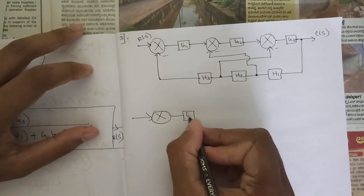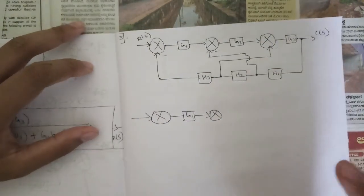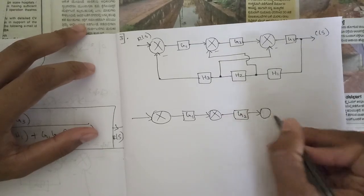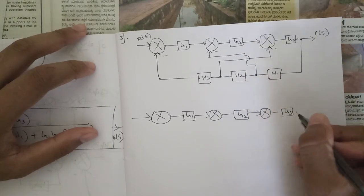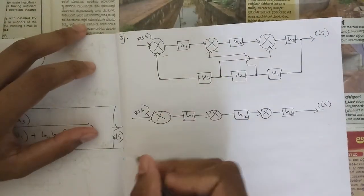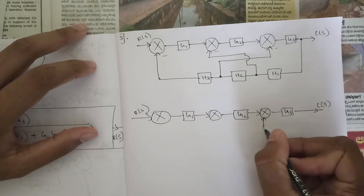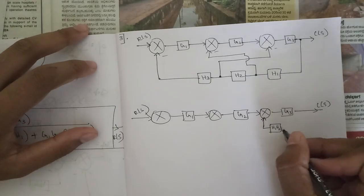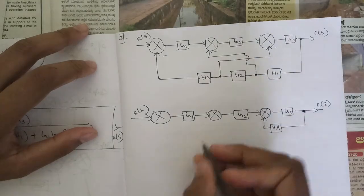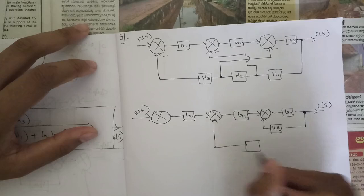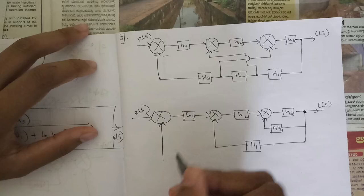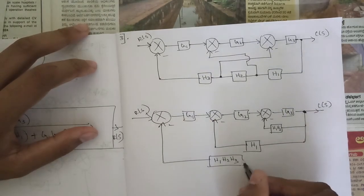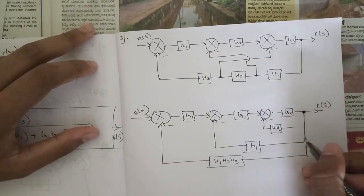The summing point remains the same, this block G1 again remains the same, this summing point again remains the same — all things remain the same. Only a few changes are there that I am just drawing. G2 again remains the same, this summing point, G3, C(s)/R(s). One change is this: h1, h2, h1, h2, h3 — these all are connected to this single takeoff point.